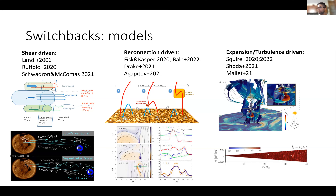Finally, expansion-turbulence driven models assume switchbacks form because in the expanding solar wind, the amplitude of fluctuations decreases at a slower rate than the background magnetic field. Given enough expansion time, fluctuations grow enough to bend the field. These are called expansion-turbulence driven because expansion also feeds turbulence by providing an extra term that produces reflected waves, giving rise to nonlinear interactions and therefore turbulence.